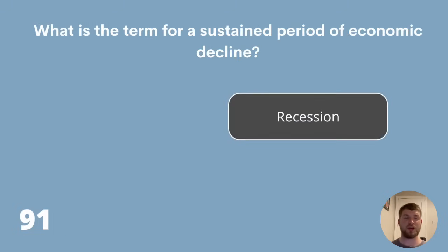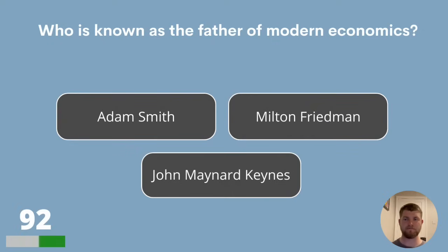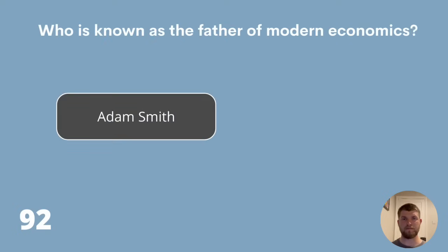Question 92. Who is known as the father of modern economics? Adam Smith, Milton Friedman or John Maynard Keynes? The father of modern economics is Adam Smith.